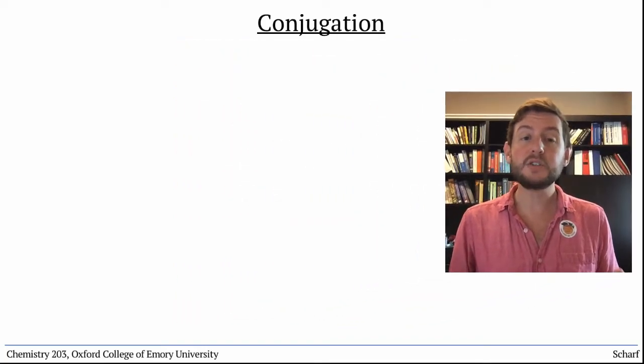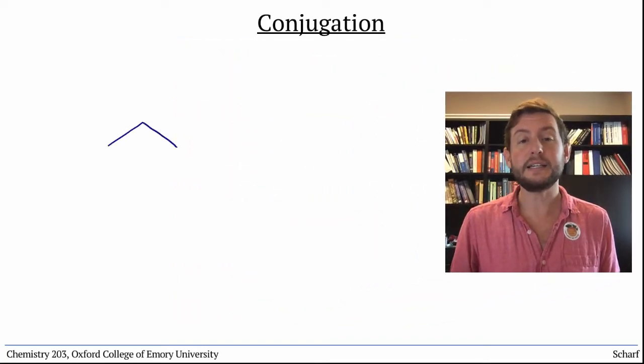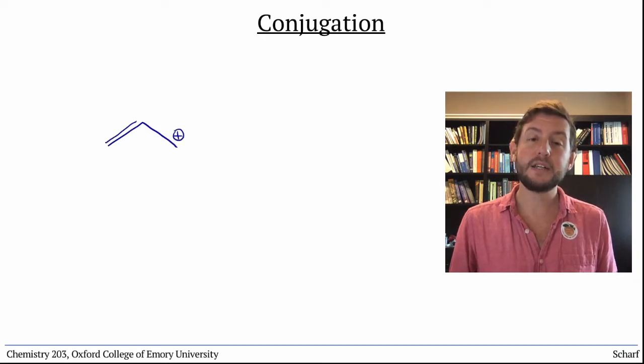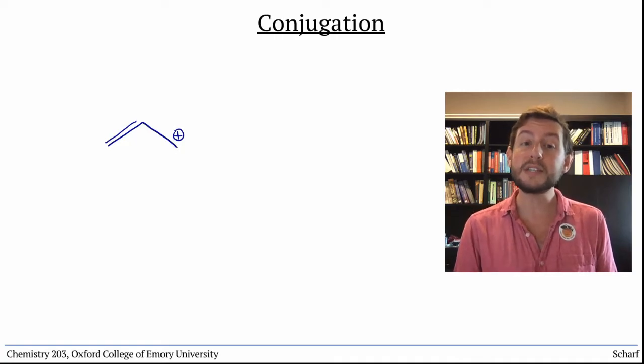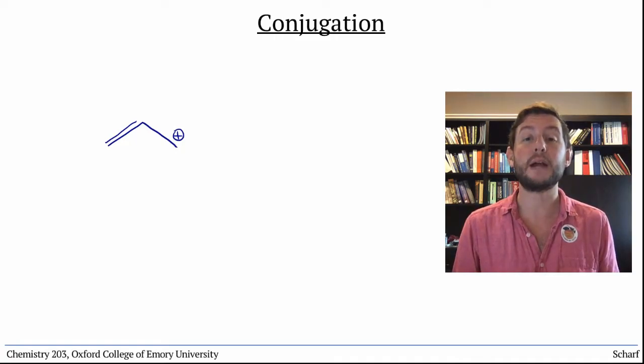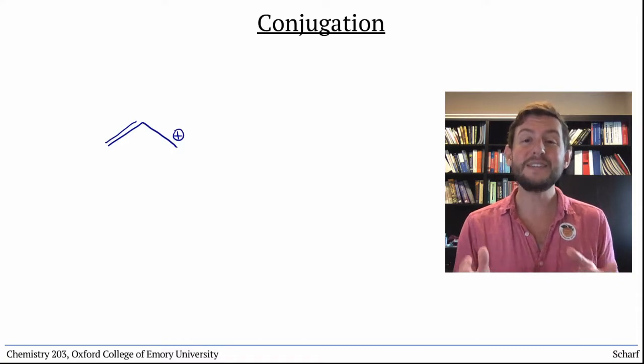The simplest conjugated system is the allyl cation. I've drawn it as an alkene with an empty p-orbital on the adjacent carbon. As we saw when we studied carbocations, this carbocation is more stable than other primary carbocations because it's resonance stabilized.